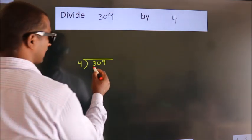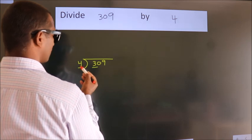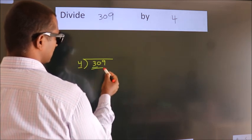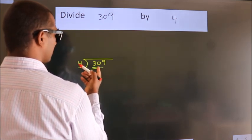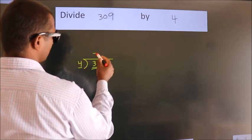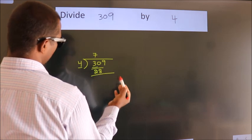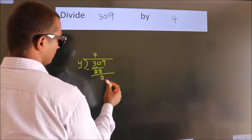Next, here we have 3. Here 4. 3 is smaller than 4, so we should take 2 numbers: 30. A number close to 30 in the 4 table is 4 times 7 equals 28. Now we should subtract. We get 2.